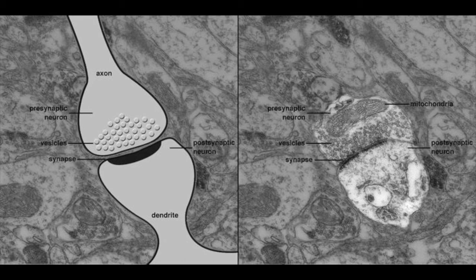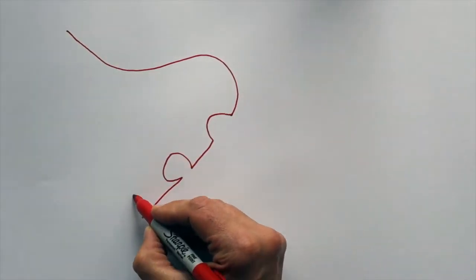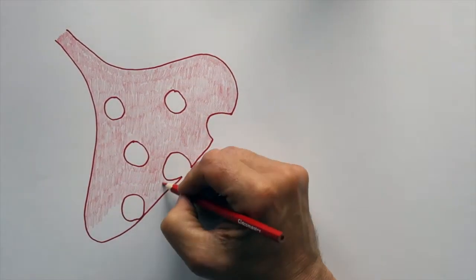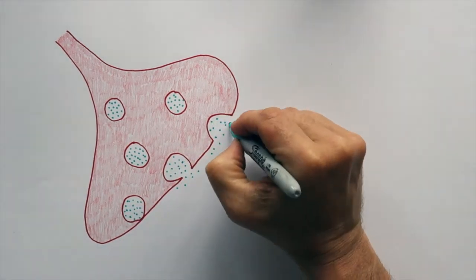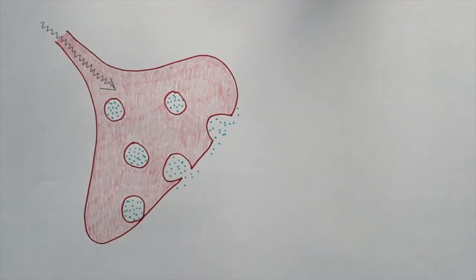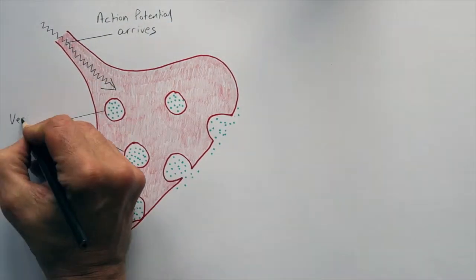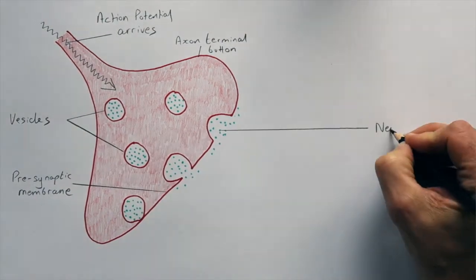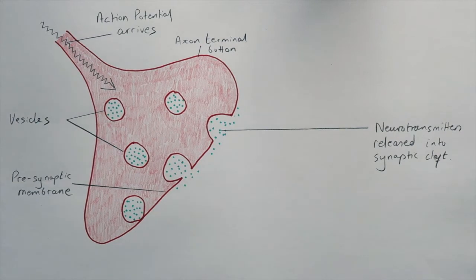Let's have a closer look at what actually takes place inside the axon terminal button. Inside the axon terminal button, there are small, tiny sacs called vesicles, and these vesicles contain the neurotransmitter molecules which will travel across the synaptic cleft. When an action potential arrives at the axon terminal button, these vesicles fuse with the pre-synaptic membrane and deposit the neurotransmitter molecules into the synaptic cleft, releasing them so they can begin their journey across to the other side. This process of fusion, where the vesicles become part of the pre-synaptic membrane, is called exocytosis.